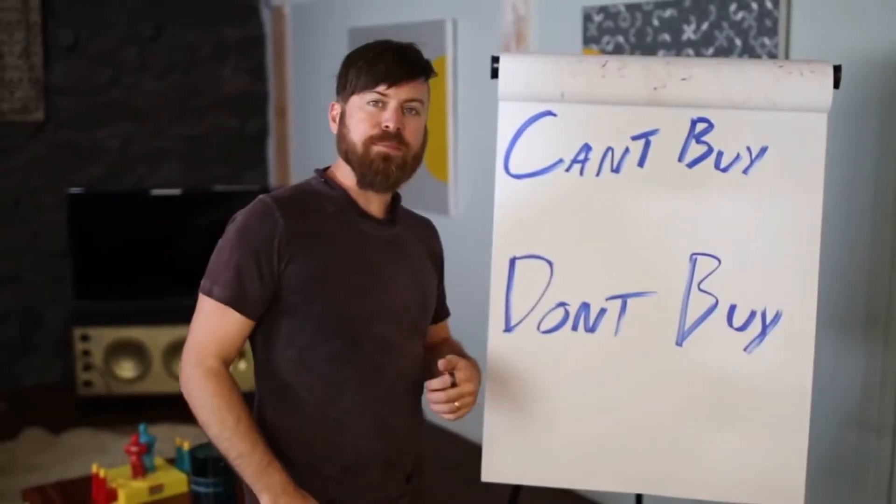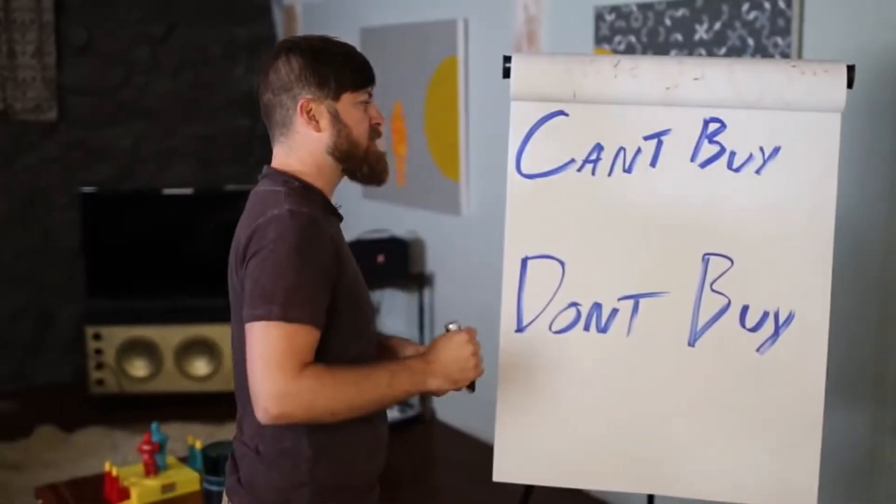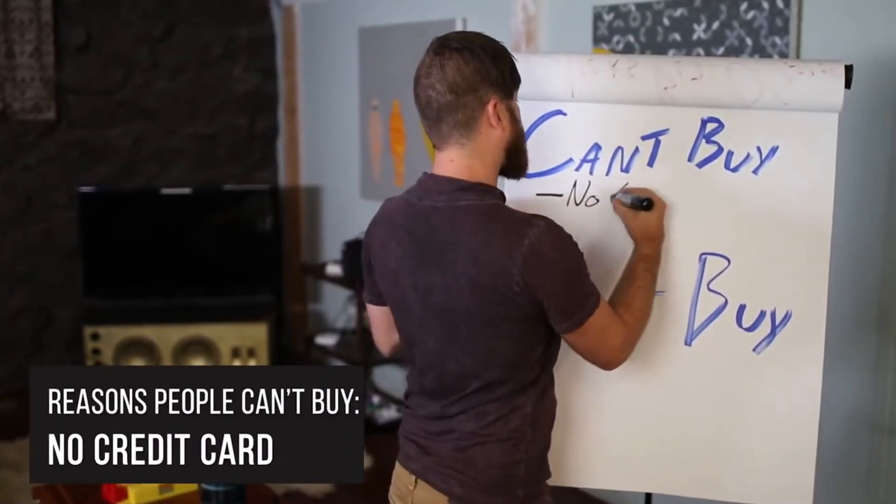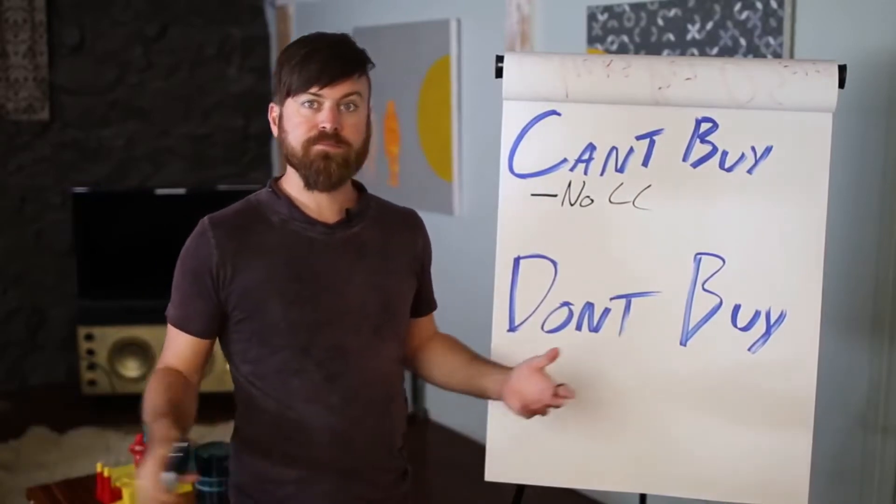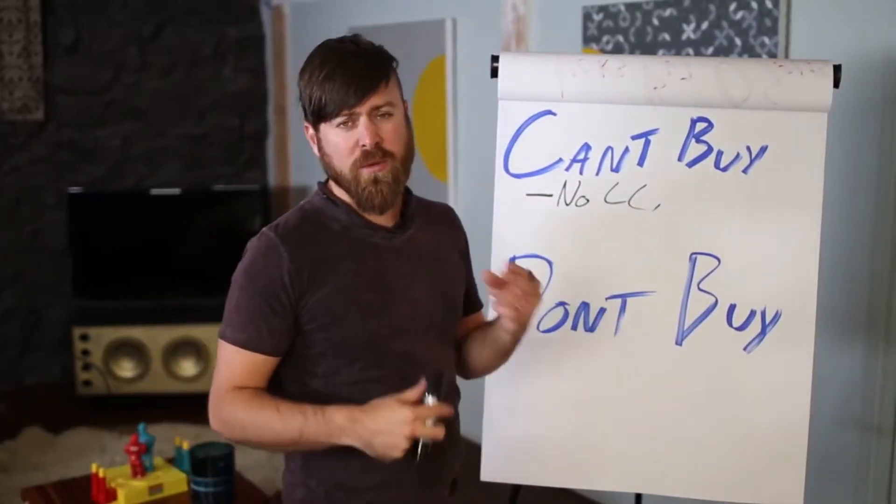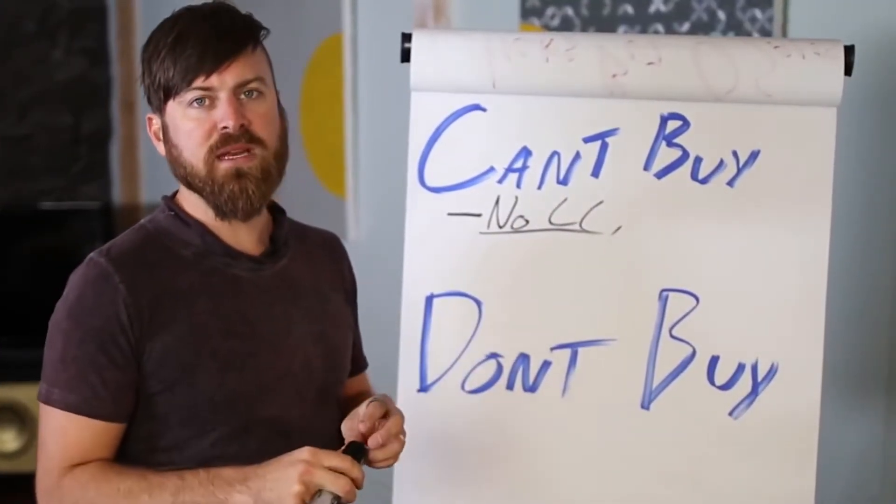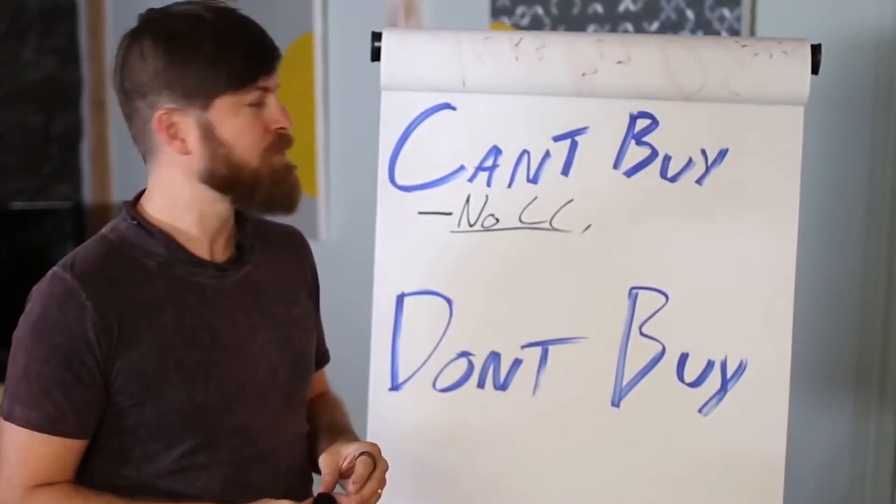So let's go to the reasons why people can't buy. The reasons people can't buy is there's a few. Maybe they don't have a credit card to buy products online or whatever payment method. They don't have a payment method that works with the affiliate network. There's seven billion people in the world and most people in the world do not have credit cards.